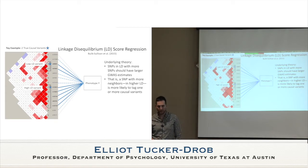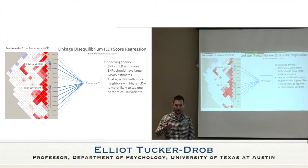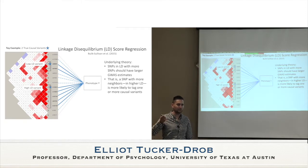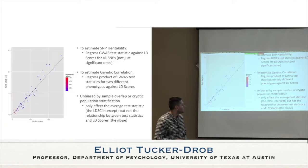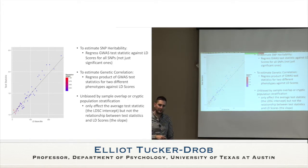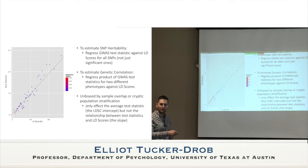The basic idea behind LD score regression is that heritability is implied when the test statistics — specifically the chi-squared statistics — are higher for variants that have higher LD scores. An LD score is literally the average squared correlation between a variant and all other variants on the array. The significance of the slope relating LD score to chi-squared is the significance of the heritability, and with a little math we can convert that slope into a heritability estimate.